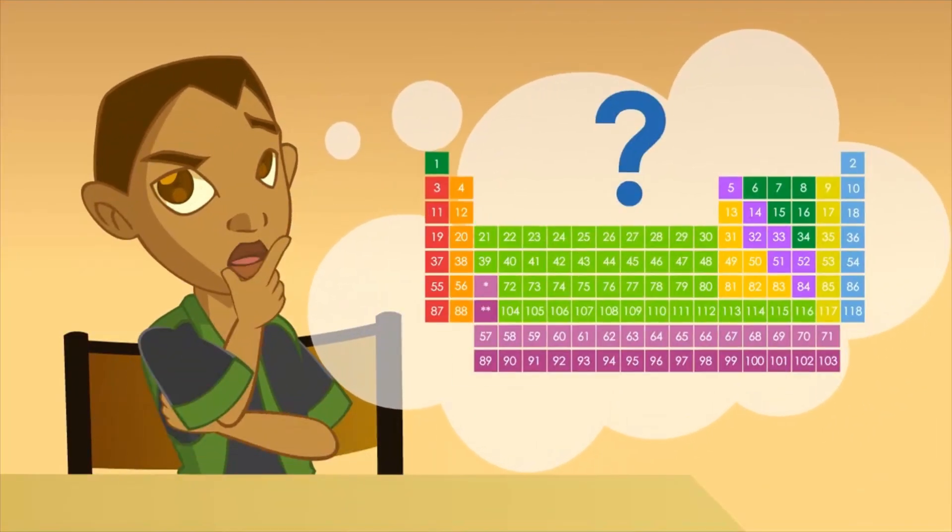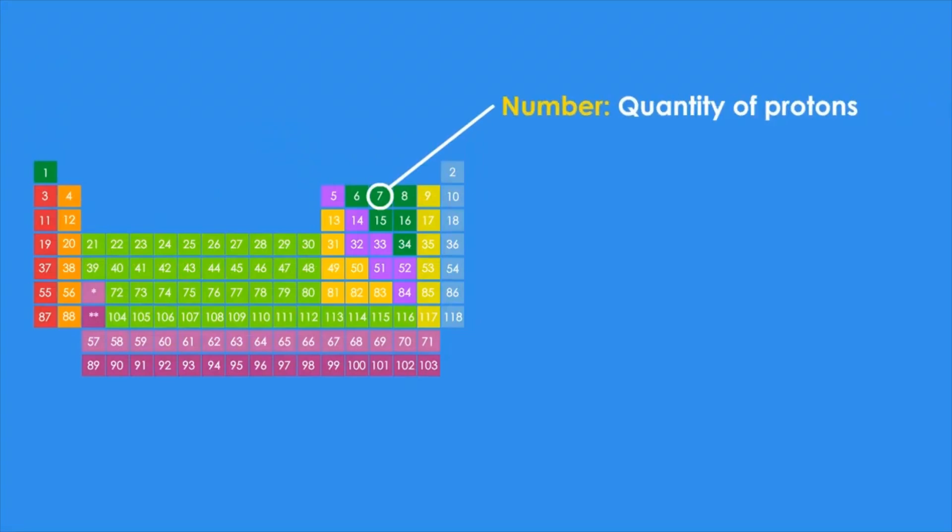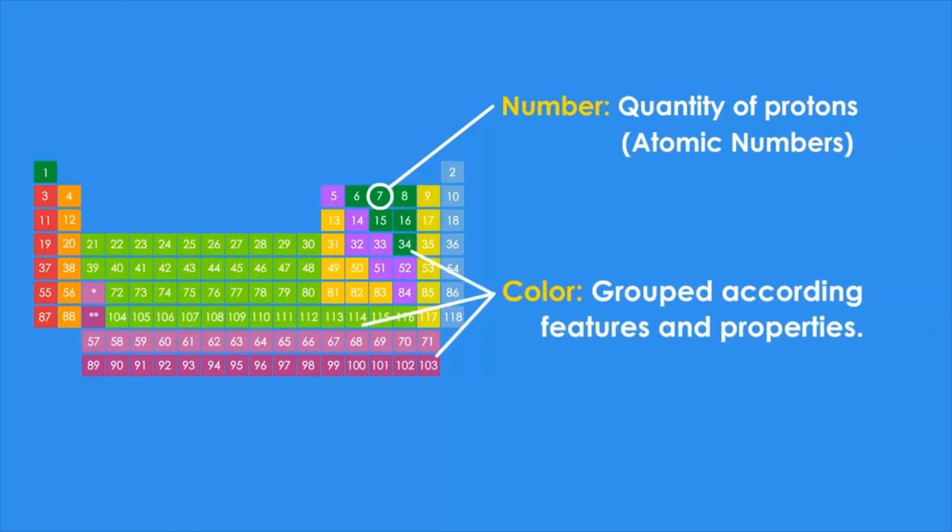What do the numbers and the colors around the table mean? The numbers show the quantity of protons present in the atom nucleus. They're called atomic numbers. The colors indicate some atoms can be grouped according to certain features and properties. These groups receive different names: metals, non-metals, metalloids and noble gases.